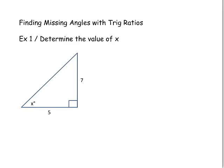In this lesson, we're going to discuss how we can use trigonometry to find missing angles within right triangles. In our first example, you're asked to determine the value of x, which is this missing angle down here in this right triangle. Looking from that x-degree angle, we're given the side length of 7, which is on the leg opposite to that x-degree angle, so we'll label that with O for opposite.